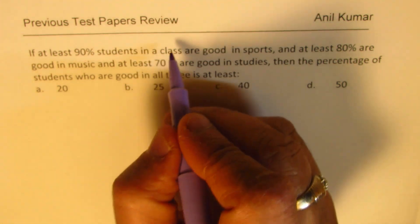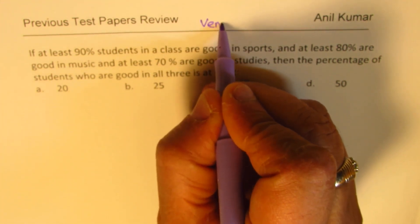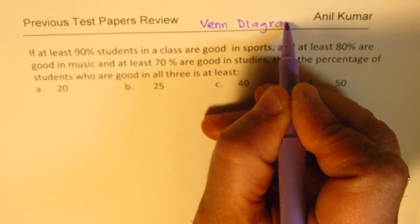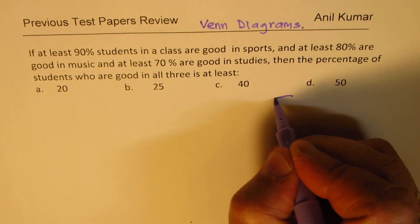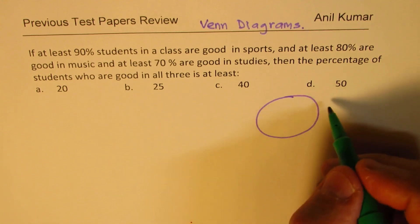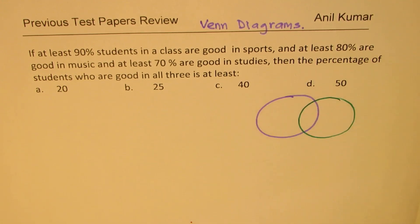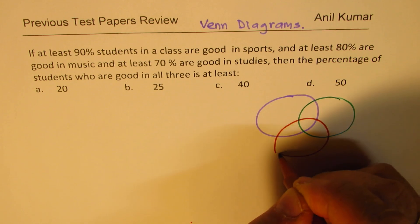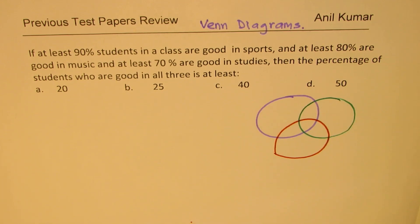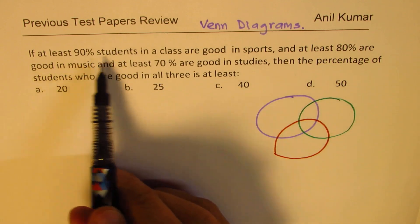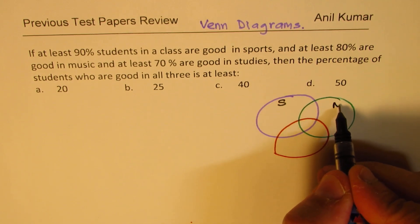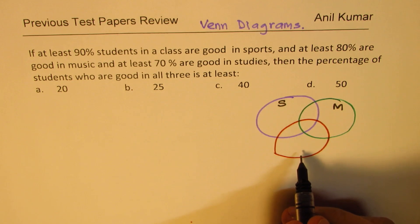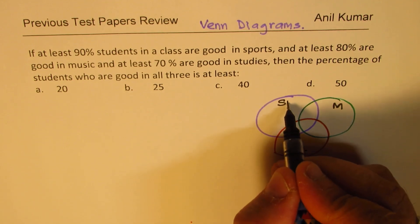Clearly, we are going to solve this using Venn diagrams. So we're talking about three things. So I need to draw three circles. These are the three circles. They represent students good in three different fields. These fields are defined to us. They are 90% students in sports, so let's put S here, 80% in music and 70% in studies, so ST and SP.